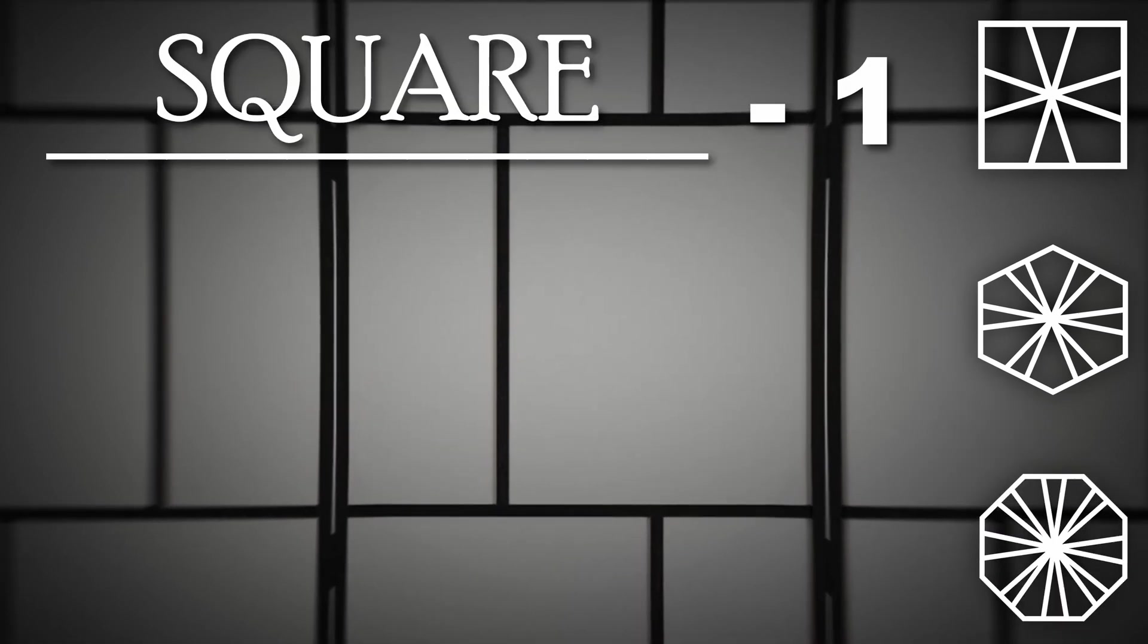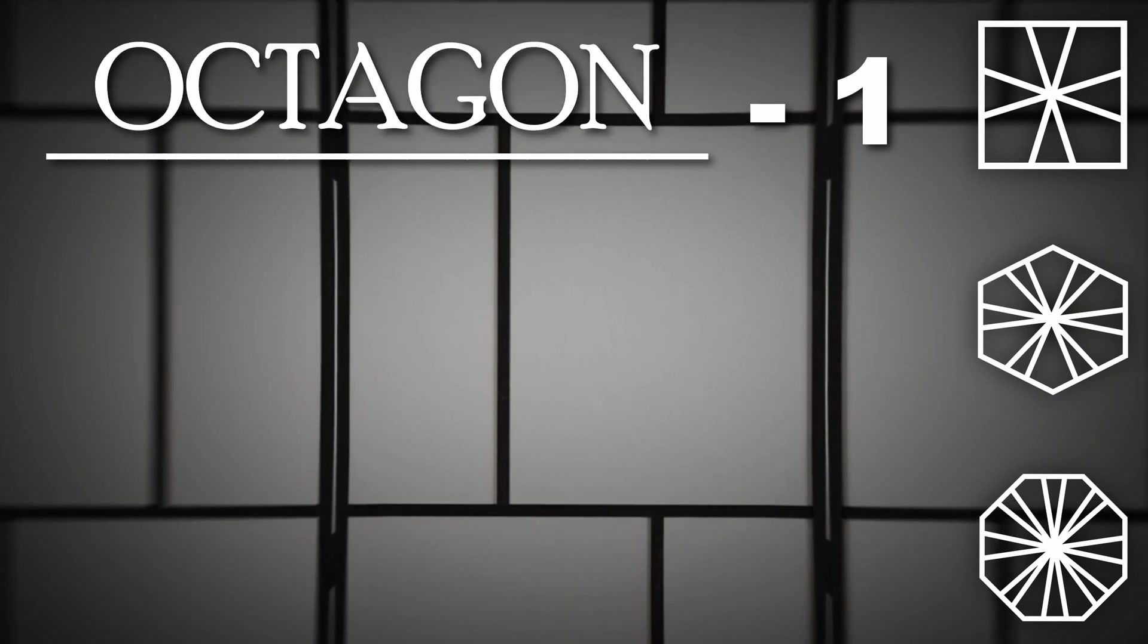It turns out you can replace the square in the Square-1's name with any other even-sided polygon. So that's exactly what I did.